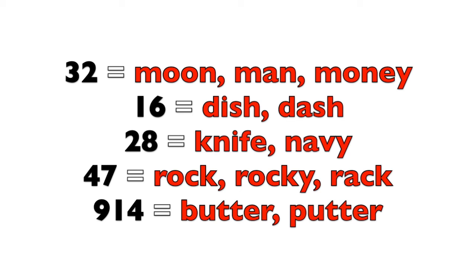For any given number, no matter how many digits, it translates into any of several words — you can even use nonsensical words. But for any given word, it only translates to one number. So 32 can be 'moon,' 'man,' or 'money.' 16 can be 'dish' or 'dash.' 28 can be 'knife' or 'navy' — notice that knife starts with K but the K is silent, so 28 is N-V. Navy also works because the Y has no value. 47 can be 'rock,' 'rocky,' 'rack,' 'Rick,' or 'Ricky.'